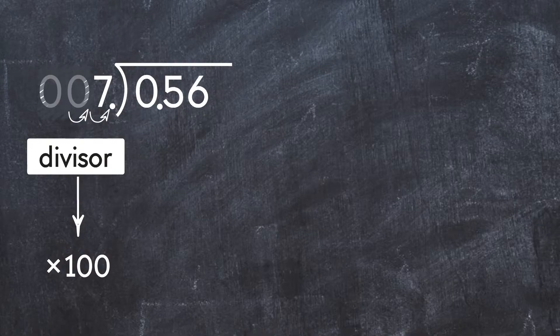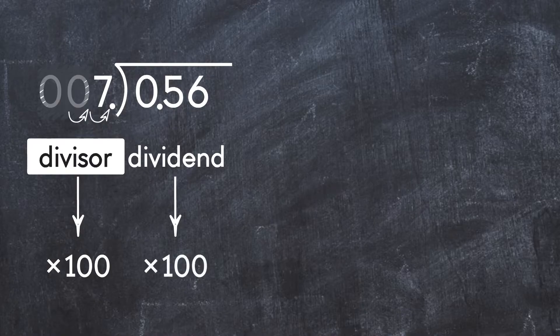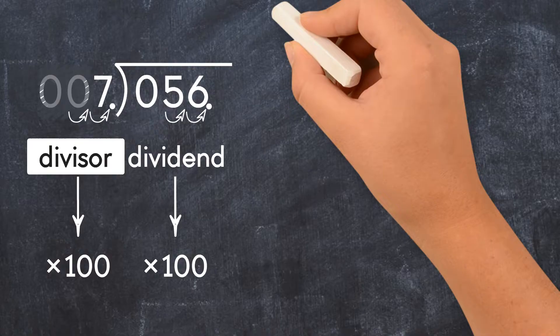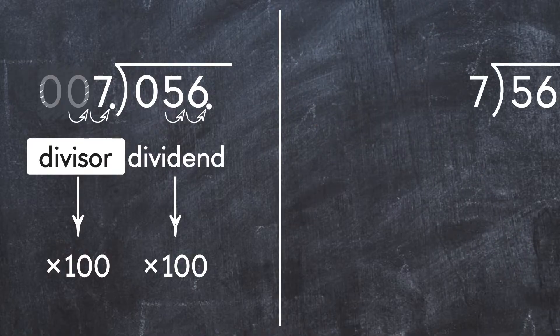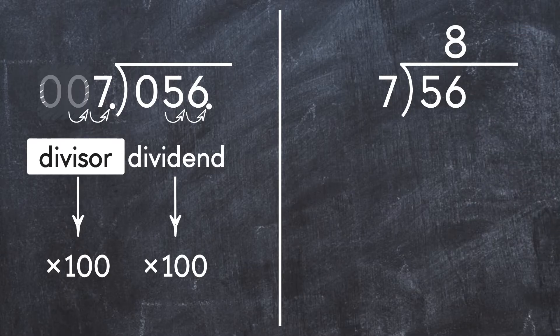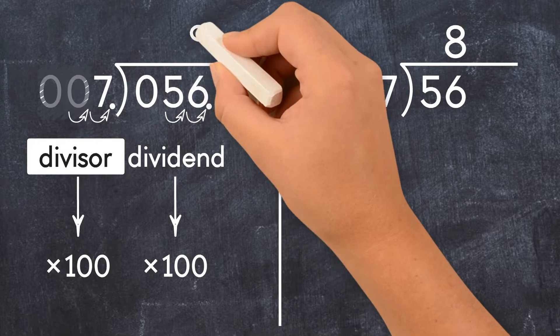To keep it balanced, we also have to multiply the dividend by the same number. So we go from 0.56 to just 56. If you multiply the divisor and the dividend by the same number, the quotient stays the same. Now we have 56 divided by 7, which we know is 8. So 0.56 divided by 0.07 is also equal to 8.